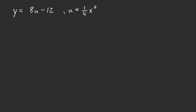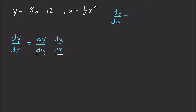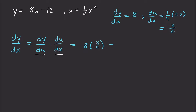For our next example, we have y as a function of u and u as a function of x, and we want to find the derivative of y in terms of x one derivative at a time. dy/dx equals dy/du times du/dx, with the du's canceling. dy/du is just 8, and du/dx: bring out 1/4, bring down the exponent of 2, lower it to 1, giving x/2. So dy/dx is 8 times x/2, which is 4x.